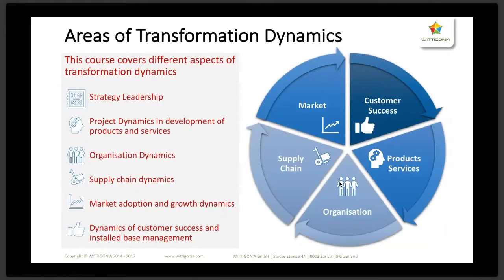As a short recap, this was our starting point — the areas of transformation dynamics. We have covered pretty much all of the sectors over two rounds and arrive again at the customer base sector. We talked specifically about customer success — a lot of customer success teams face the question of how to safeguard the customer base, how to increase retention, and minimize churn.